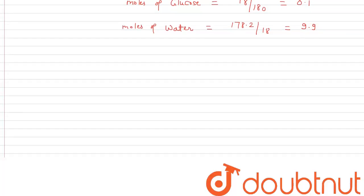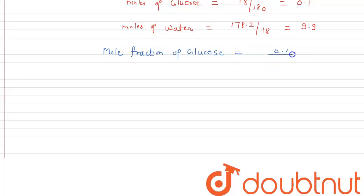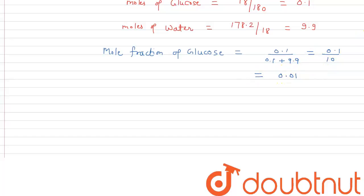From here we can find out the mole fraction of glucose. Mole fraction of glucose = 0.1 divided by (0.1 + 9.9), which equals 0.1 divided by 10, giving a mole fraction of glucose of 0.01.